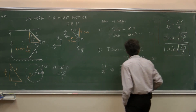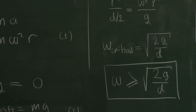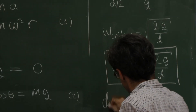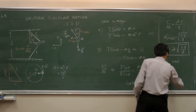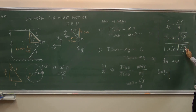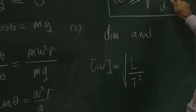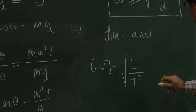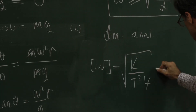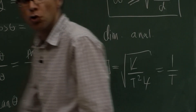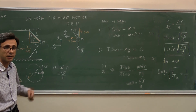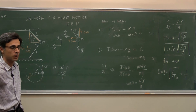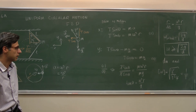Let's check the dimension. The dimension of omega is the square root of the dimension of g — which is length over time squared — divided by the dimension of d, which is length. Length cancels, leaving 1/time, which is correct. The standard unit for omega is radians per second, and since radians are dimensionless, it is indeed 1/time.